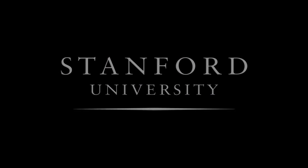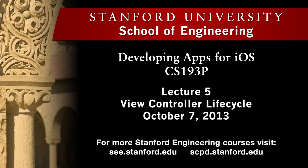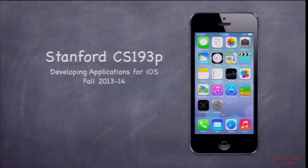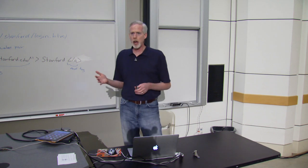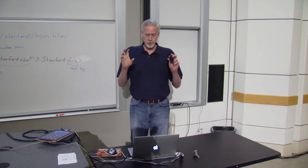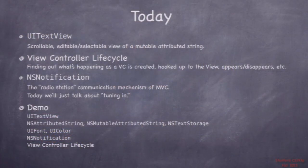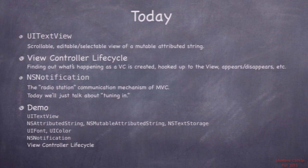Stanford University. Welcome to CS193P, fall of 2013-2014. Today we're going to continue our discussion of attributed string from last time and talk about UITextView, which is basically a mutable attributed string viewer. Then we're going to talk about view controller life cycle — the life cycle of the controller part of your MVC, and how it gets notified at different times about what's going on.